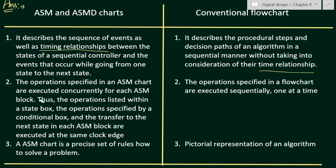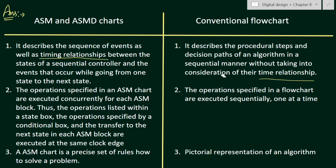The second difference is that the operations specified by an ASM chart are executed concurrently for each ASM block. Within each ASM block the operations are executed concurrently — at the falling or rising edge of the clock all operations will be done at the same edge. The operations listed within a state box, the operations specified by a conditional box, and the transfer to the next state in each ASM block are all executed at the same clock edge.